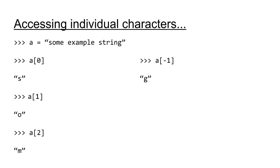For example, if we enter negative 1, we'll be returned the last element; negative 2, the second from last element, and so on. Here we're accessing the last element simply by entering the index negative 1, and the last element here is G. Note that we can also use the bracket operator syntax to set individual characters in the string. For example, if we called A of 0 equals Z, it would replace the S in our original string with a Z.